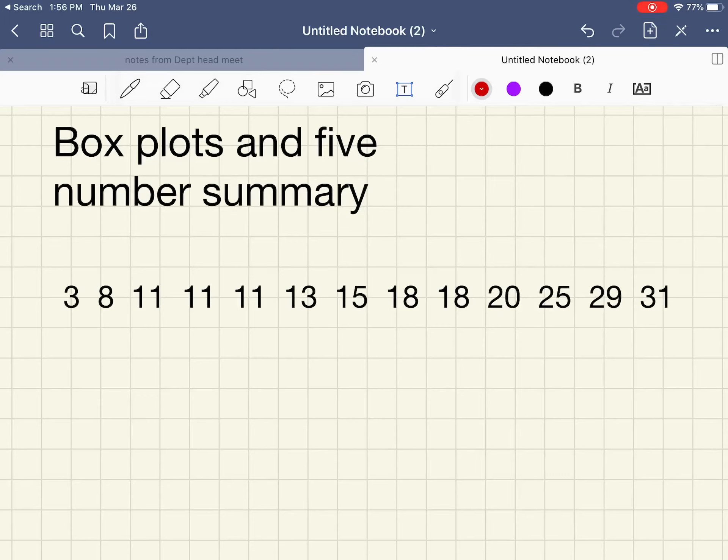This is a video on how to create a box plot and come up with a five-number summary for a set of data. I have organized a set of 13 values here: 3, 8, 11, 11, 11, 13, 15, 18, 18, 20, 25, 29, and 31. This works for any size data set.